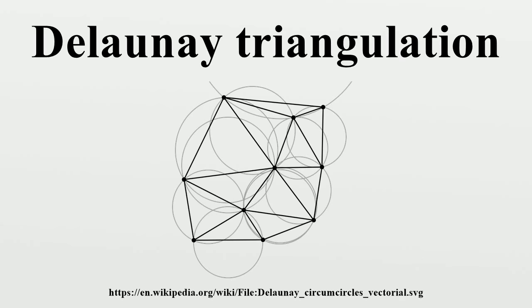The problem of finding the Delaunay triangulation of a set of points in d-dimensional Euclidean space can be converted to the problem of finding the convex hull of a set of points in (d+1)-dimensional space, by giving each point P an extra coordinate equal to |P|², taking the bottom side of the convex hull, and mapping back to d-dimensional space by deleting the last coordinate. As the convex hull is unique, so is the triangulation. Assuming all facets of the convex hull are simplices, non-simplicial facets only occur when d+2 of the original points lie on the same d-hypersphere, i.e., the points are not in general position.